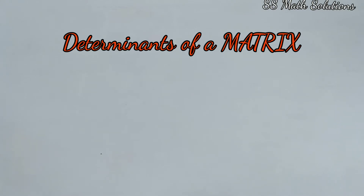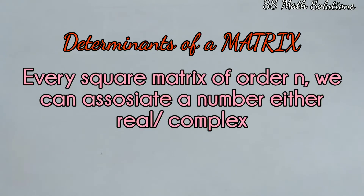So what is a determinant? To every square matrix A equal to Aij of order n, we can associate a number. That number may be real or complex. It's called a determinant of a square matrix — a constant number, that is real or complex, that is called a determinant of a square matrix.